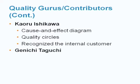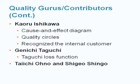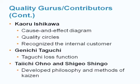Genichi Taguchi created the Taguchi Loss Function. Taiichi Ohno and Shigeo Shingo — these two developed the philosophy and method of Kaizen. Kaizen is a Japanese word that refers to continuous improvement.